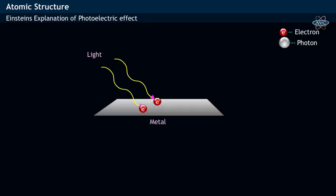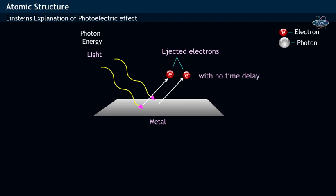When light falls on metal surface, the particle photon collides with the electron, transfers its energy h nu to it, due to which the electrons are ejected from the metal surface without any time delay.